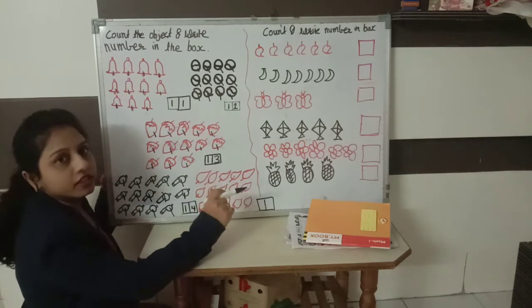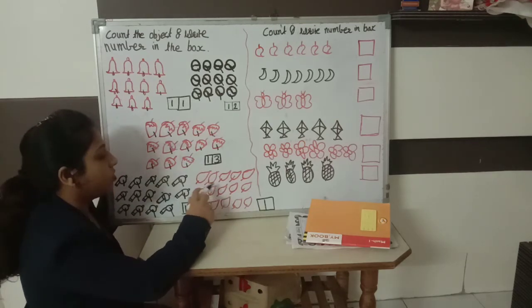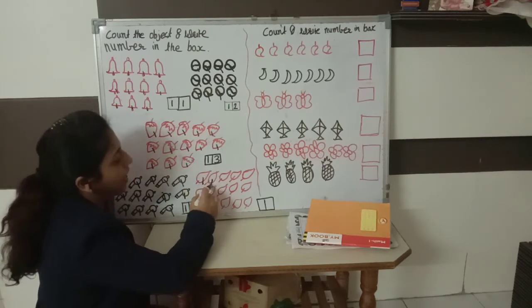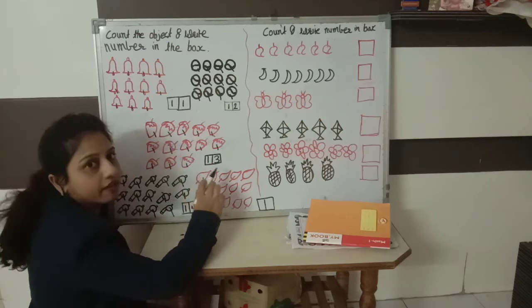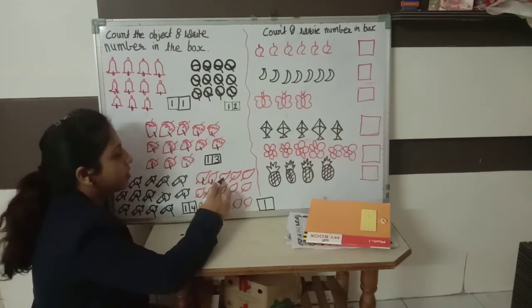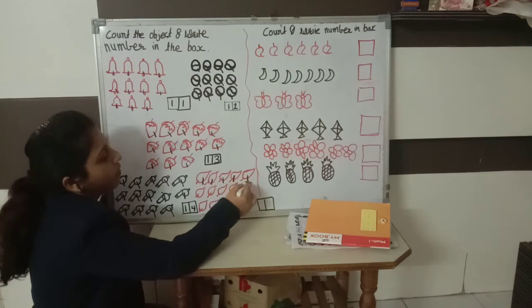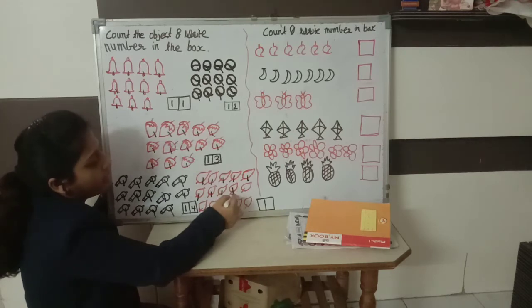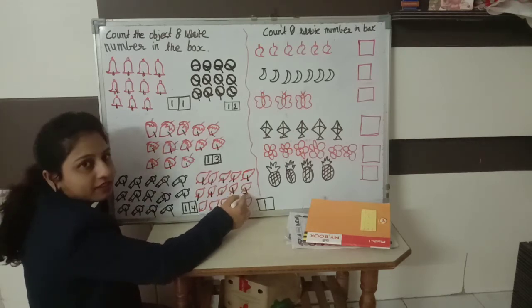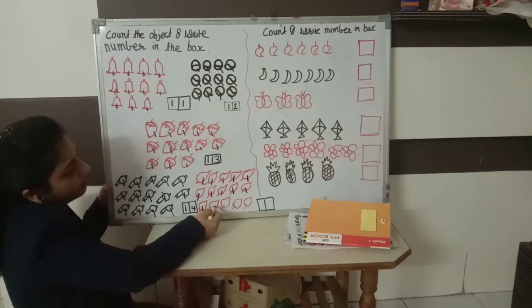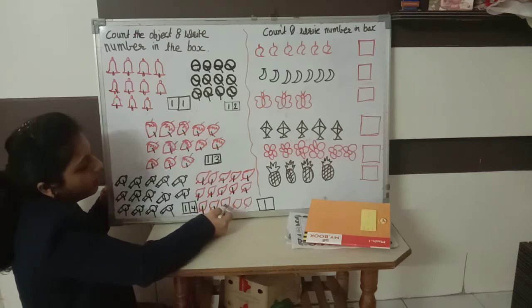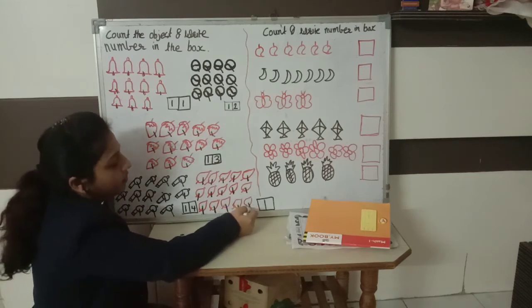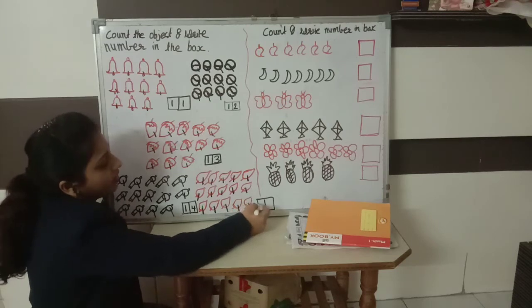Look at here. What is this? These are leaves. How many leaves are here? Let's count. 1, 2, 3, 4, 5, 6, 7, 8, 9, 10 and then 11, 12, 13, 14, 15. How many leaves are here?